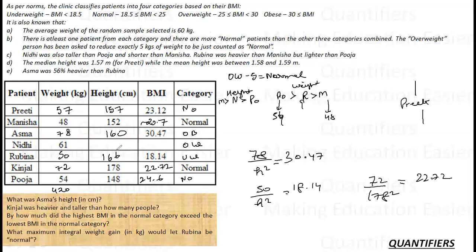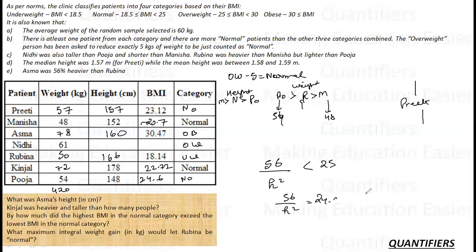For Nidhi, I don't know height of Nidhi, but I know that overweight person needs to lose 5 kg to be just normal. Which means if Nidhi loses 5 kg, she will be 46. In that case, 46 divided by s square will be equal to 24.99. I'll have to take Nidhi's height as 149 point something or I can say 150. It has to be an integer, so 150.